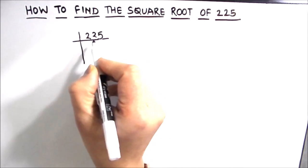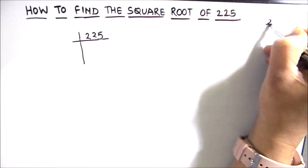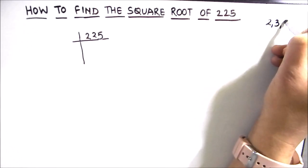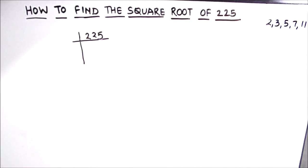So let's divide 225 by prime numbers. I'm going to write first few prime numbers on the right hand side of the board so that it is easy for us in our division. So 2, 3, 5, 7, 11 are the first few prime numbers.